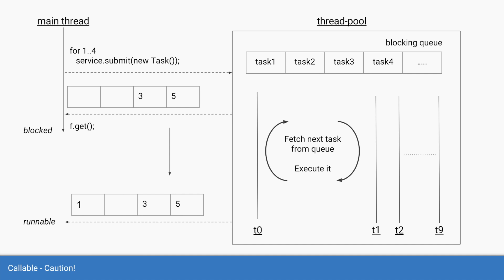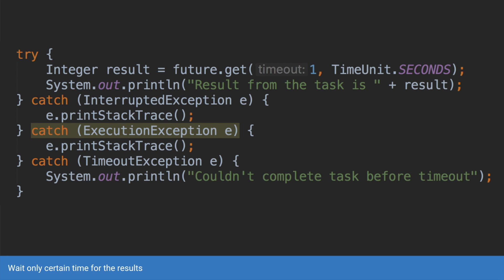One way to get around these problems is to use a timeout. The get method provides an overloaded version where you specify the maximum amount of time you are willing to wait for the task to complete. For example, future.get with a timeout of one second — if the future is not ready within that time, it throws a TimeoutException, which is a checked exception, and you can catch it to do logging or handle the failed result.